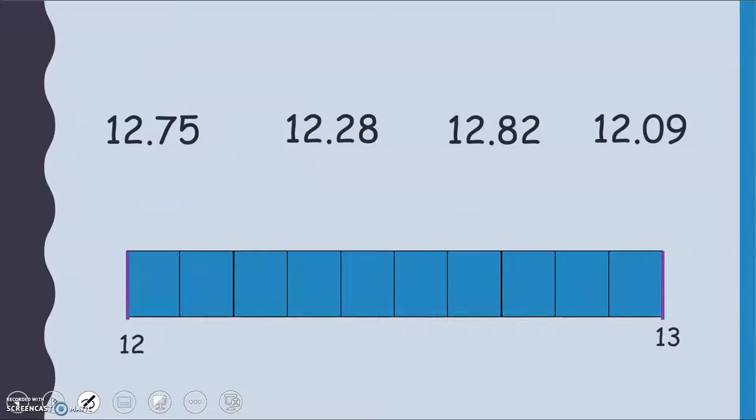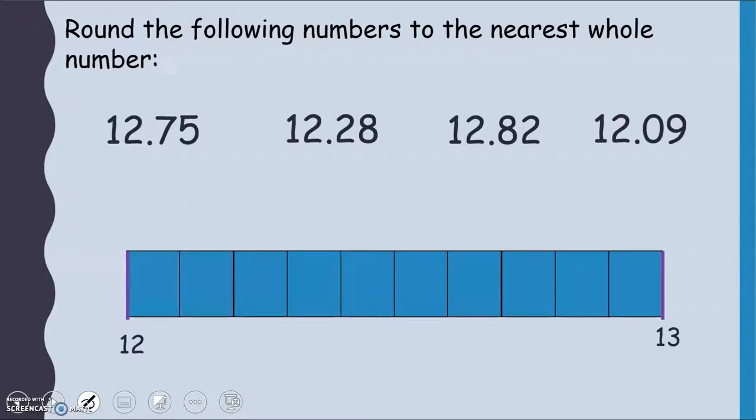Here we've got two decimal places and we are still going to round the following numbers to their nearest whole number. The whole number this time, our numbers here are between 12 and 13. 12.75, well, 12.7 would be here, so I want to be halfway in between 12.7 and 12.8 for 12.75.